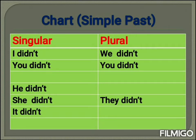Now see the simple past tense chart. This chart also includes two columns — singular and plural. Singular: I didn't. Plural: we didn't, you didn't. He/she/it: didn't. Plural: they didn't.